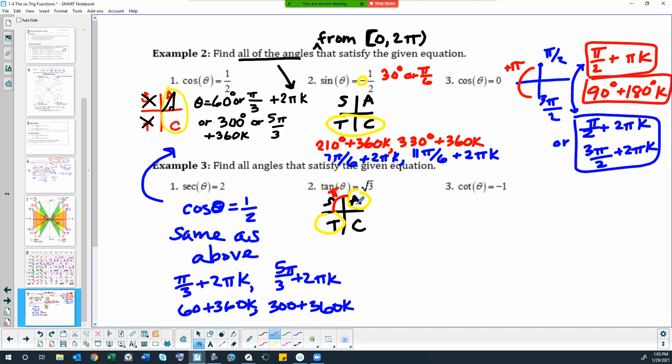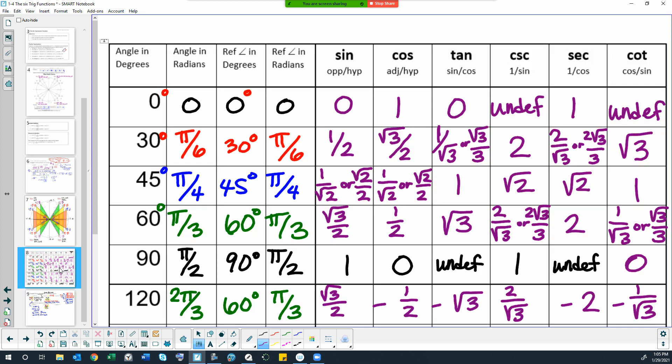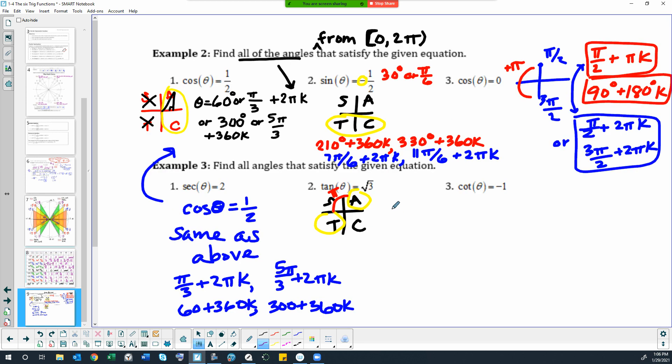And that will go to here, back to here, back to here, back to here for infinity, right? So let's think about which value tangent is square root of three. My brain doesn't want to function right now. So let's just find out on our chart. It looks like it's 60 degrees or pi thirds. So that would be 60 degrees plus 180k or pi thirds plus pi k.